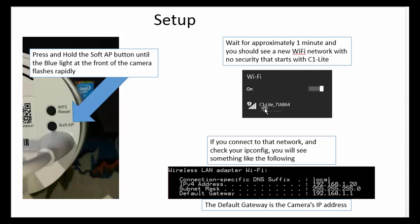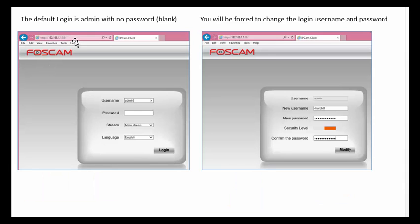There's no security, nothing — just connect to it. And if you go to your IP settings — again this will work with anything: Apple, Android, Linux, Windows — you'll notice the default gateway is 192.168.1.1. That is the camera. It's that simple. So go to your web browser of choice and connect to the camera.